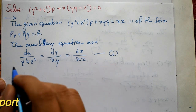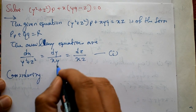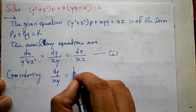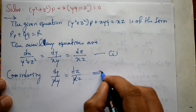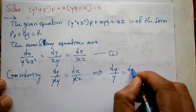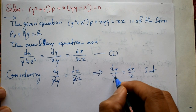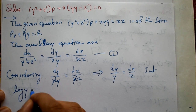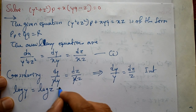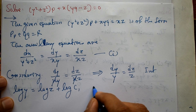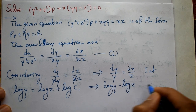Considering the second and third terms: dy/(xy) = dz/(xz). The x cancels, giving dy/y = dz/z. Integrating both sides: the integral of 1/y with respect to y gives log y, and the integral of 1/z with respect to z gives log z, plus integration constant log c1.